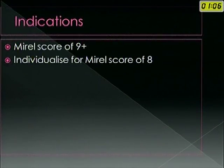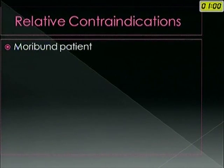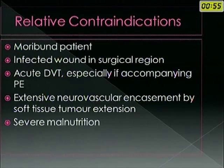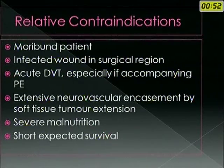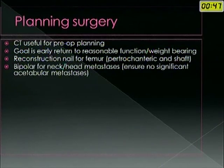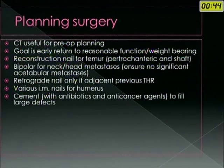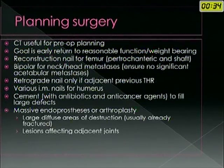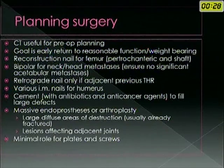Relative contraindications for surgical treatment include moribund patient, infected wound, acute DVT, neurovascular encasement, severe malnutrition and a very short expected survival. Careful planning of surgery is important. Different areas need different types of treatment: for long bones, intramedullary nailing is the best treatment; for the acetabular or femoral head and neck area, a bipolar prosthesis can be used; and massive endoprosthesis or arthroplasty is indicated provided the patient's lifespan is adequate.